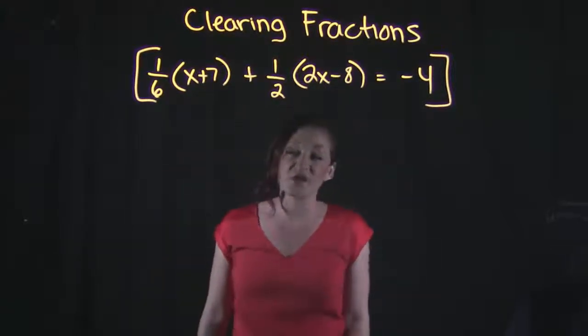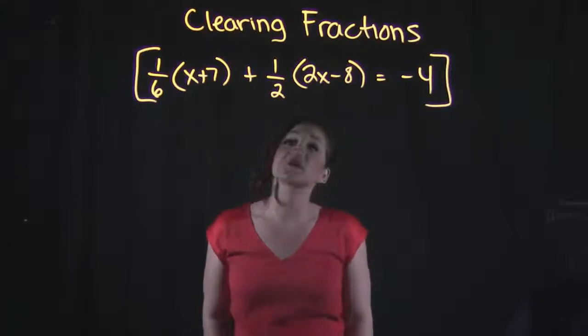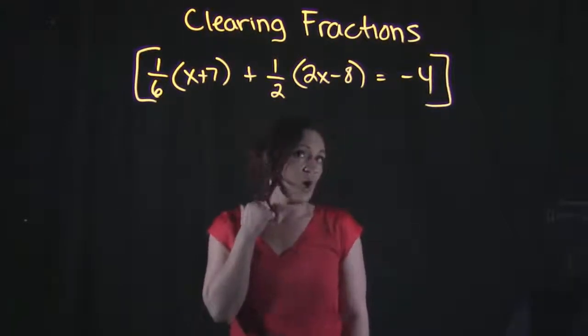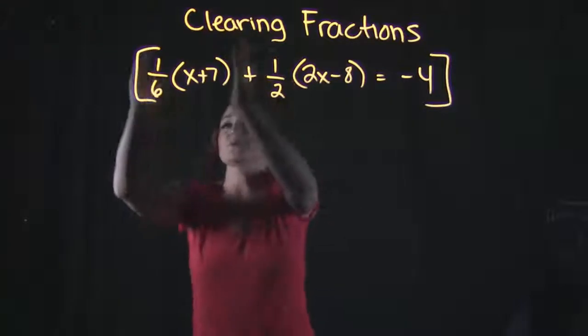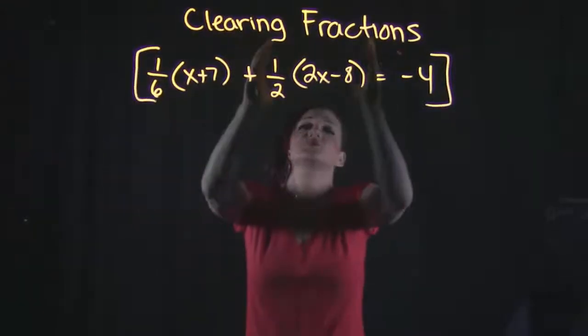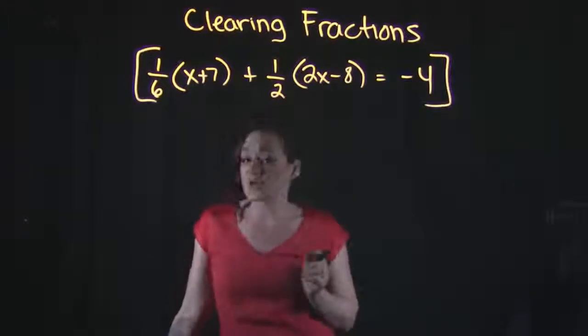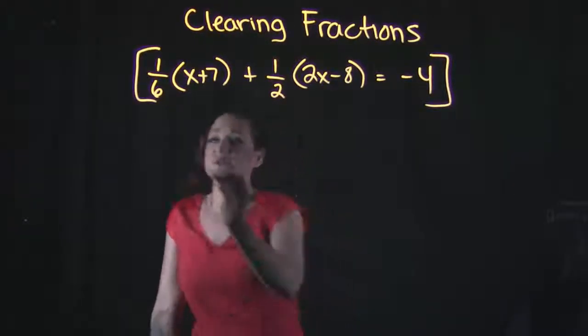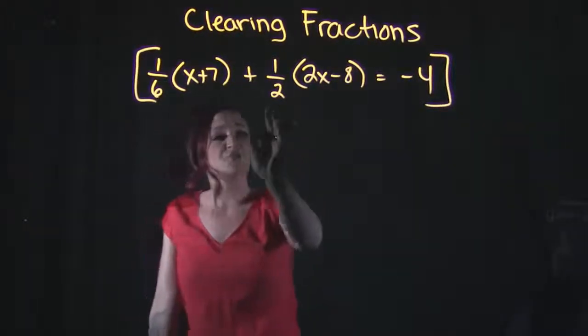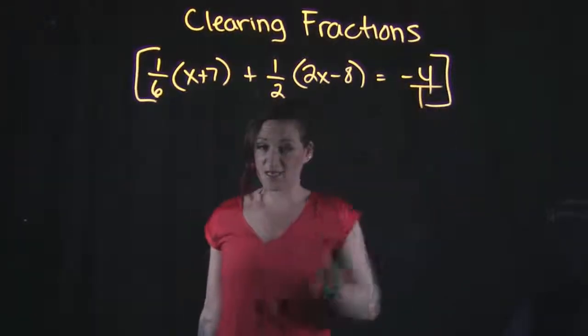So I need to focus on finding the lowest common denominator, which means we need to take a look at the denominators here. I have three terms in this problem, term one, term two, term three, and I'm specifically looking at the denominators in each one of those terms. So I have a six, I have a two, and technically a one.